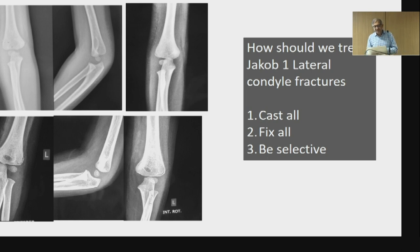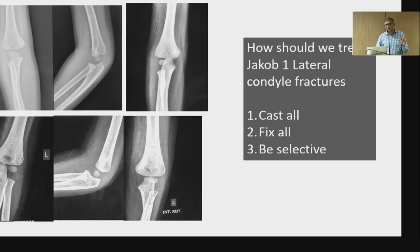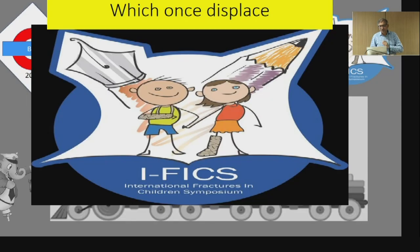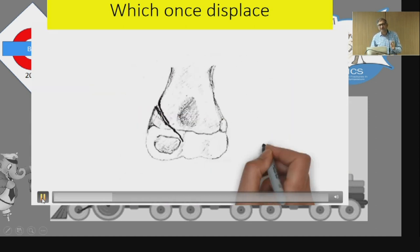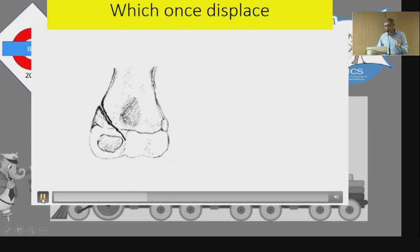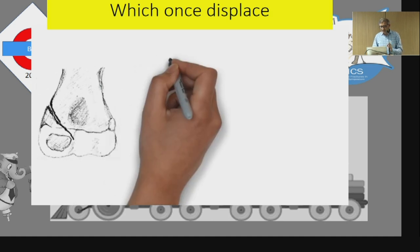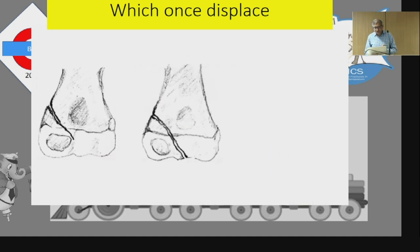So it's a mixed house with various attitudes. Some people cast all the lateral condyle fractures which are minimally displaced — Jacob 1. Some of them fix all, and some of them are selective. I'm going to resolve this dilemma today by telling you some thought processes which are not given in books but are my thought processes.